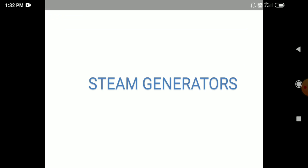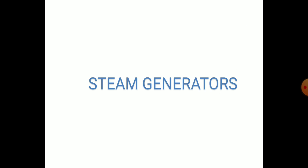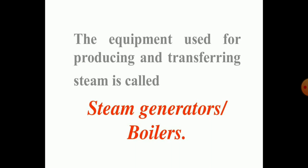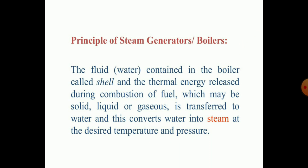The name of the topic is Principles of Basics in Steam Generators. The equipment used to produce or to transfer steam is called the steam generators. The principle on which it works is: the fluid or water contained in the boiler, which is called a shell, and the thermal energy released during the combustion of fuel — which may be solid, liquid, or gaseous — is transferred to the water, which converts the water into steam at the desired temperature and up to moderate pressure. This is the principle on which steam generators work.